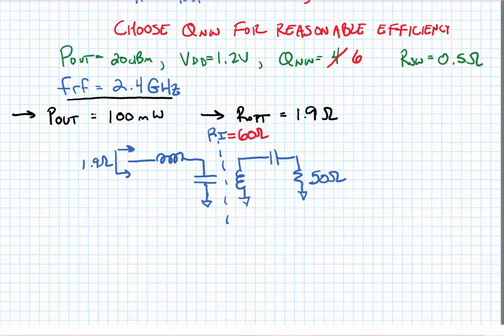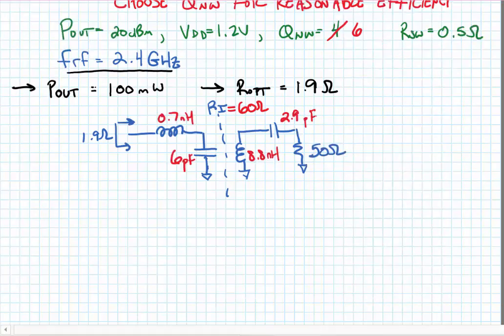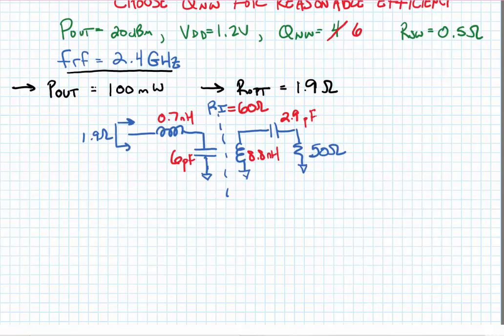You can use a Smith chart or you can do the series to parallel transformations in order to find the component values for these parts. But I've already done the calculation, and if you were to find these parts, you should get the following values. From the 1.9 ohm side, a 0.7 nanohenry inductor and a 6 picofarad capacitor. And on the 50 ohm side, we have an 8.8 nanohenry inductor and a 2.9 picofarad capacitor.